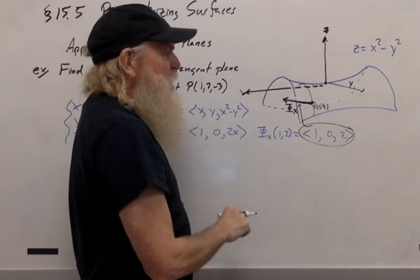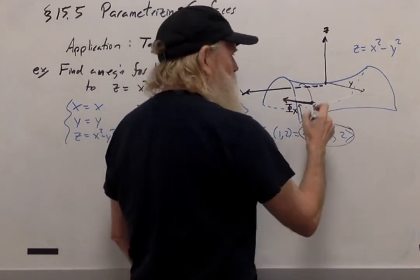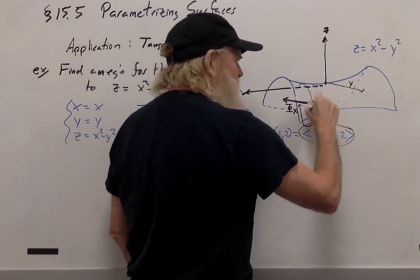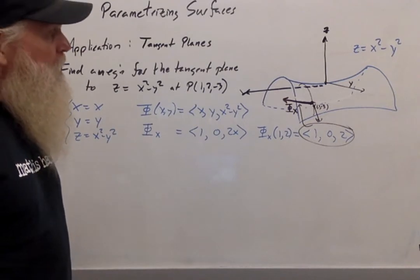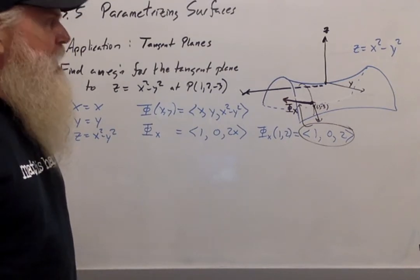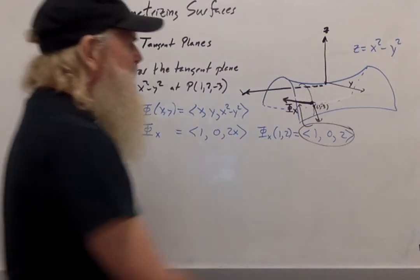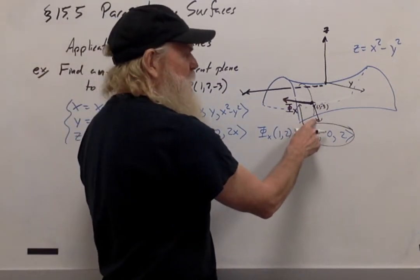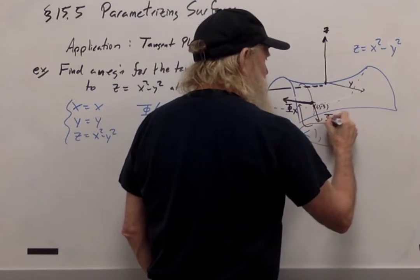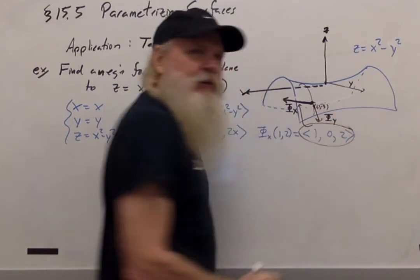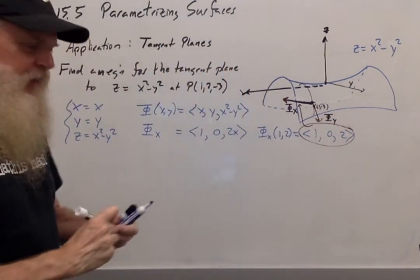So if I then differentiate with respect to y holding x constant, that will give me a vector which is tangent to the curve. And since the curve is in the surface, this vector is going to be tangent to the surface as well. And that's going to be the vector d phi dy. So let's calculate d phi dy.